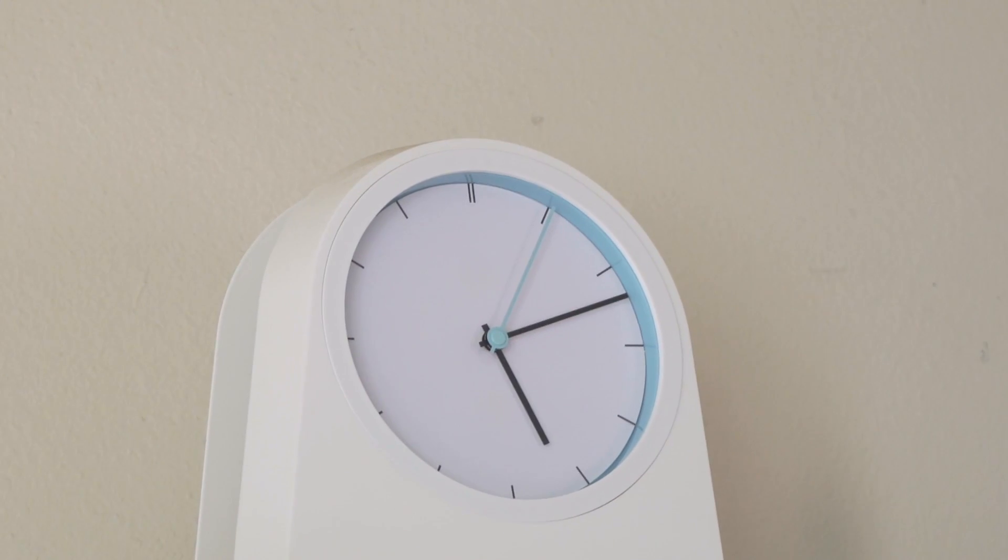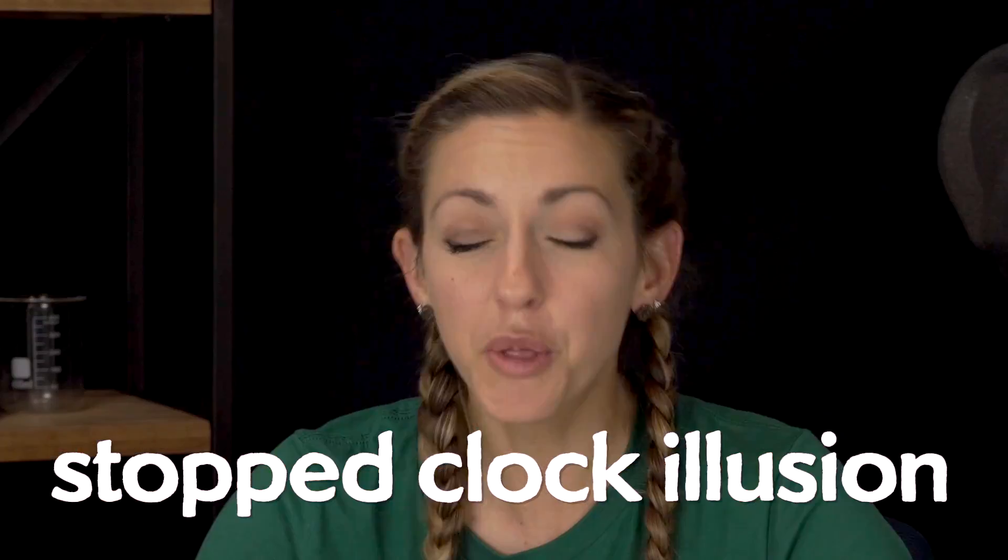You ever look at a clock in a classroom and you're like 'is that clock stopped?' because the second hand doesn't appear to be moving and then suddenly it does? You were probably moving your eyes as the second hand was moving and your brain processed it as being still before your eyes settled on it. So by the time it moved again, you perceived a longer second.